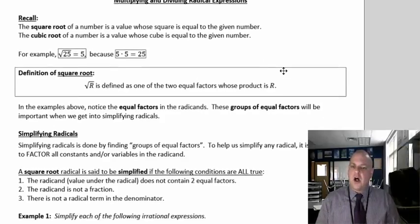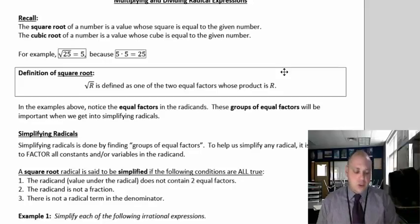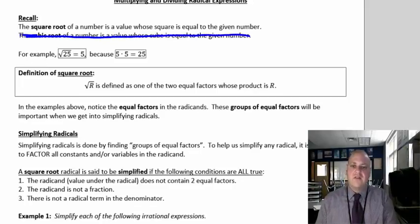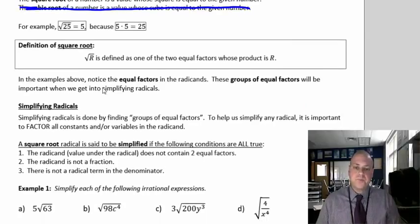Just recall some review here. The square root of a number is a value whose square is equal to the given number. The cubic root is a value whose cube is equal to the given number — you can cross that right off, we don't need the cubic root. We're not going to be doing cubic roots in this lesson. For example, radical 25 equals 5 because 5 times 5 is 25. We should know what a square root is.